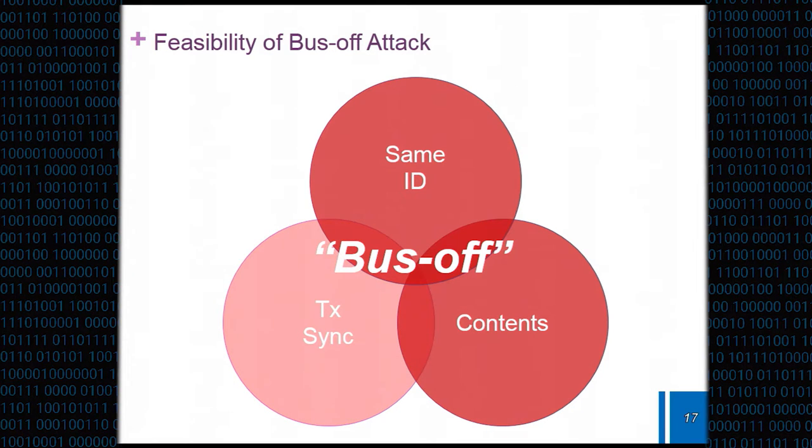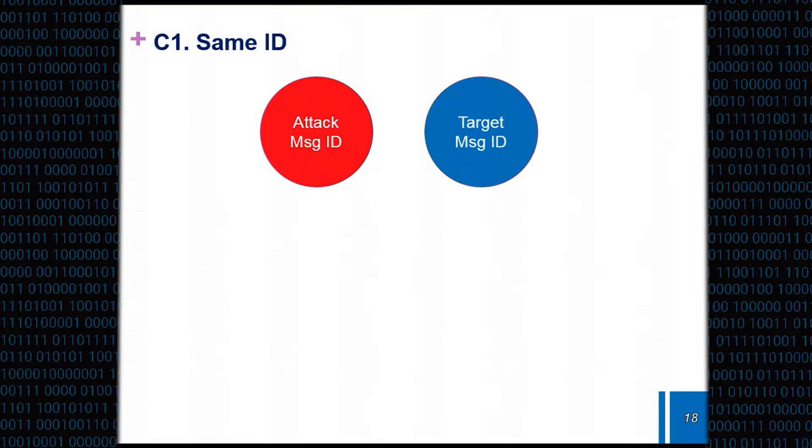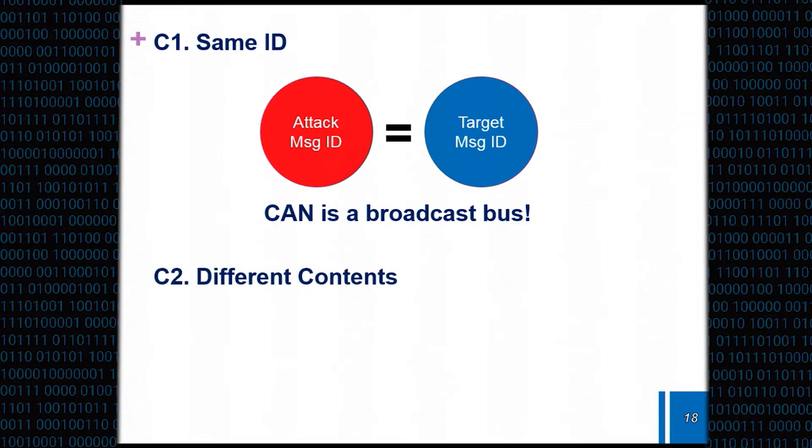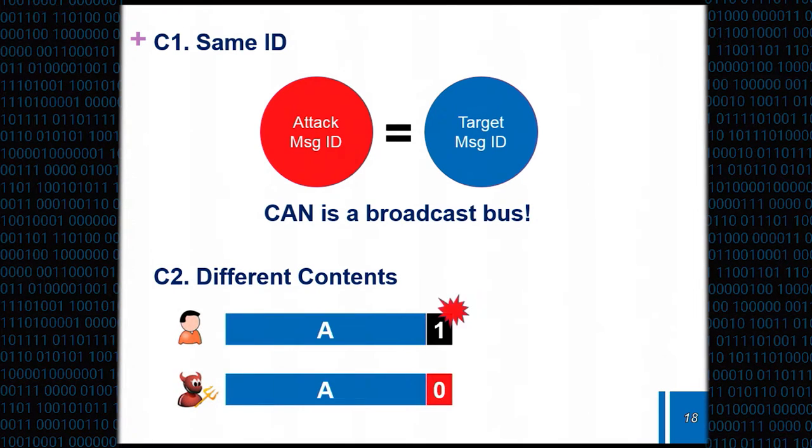For achieving the first condition of having the same ID, because CAN is a broadcast bus, it can just monitor the bus, look at the IDs that it would like to target and just use that ID when it injects its message. The next is having different contents. Although all the precedent bits should be the same, only one bit of the adversity should be zero whereas the victim should be one. The most easiest way to achieve this is having a data length code of zero. Data length codes defines what length this message has. Normally in vehicles, this DLC has a value larger than zero but if the attacker just writes that DLC part with all zeros, then it can definitely satisfy the second condition.